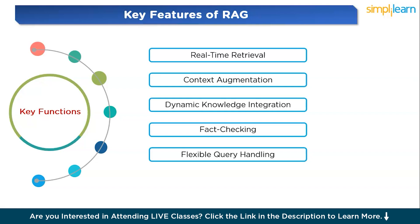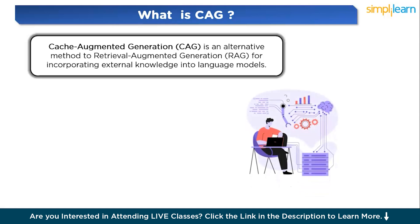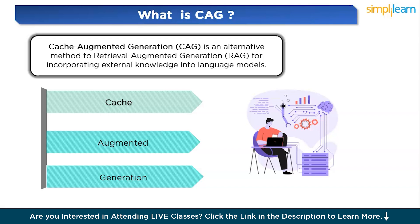These features make RAG a powerful method for integrating external knowledge into language models, improving accuracy, relevance, and ability to handle diverse and dynamic queries. Now let's understand Cache Augmented Generation, or CAG. CAG is an alternative to RAG for incorporating external knowledge into large language models. Unlike RAG, which retrieves information from an external database in real time, CAG preloads a curated set of relevant knowledge, enabling faster and more efficient inference without a retrieval step during runtime.